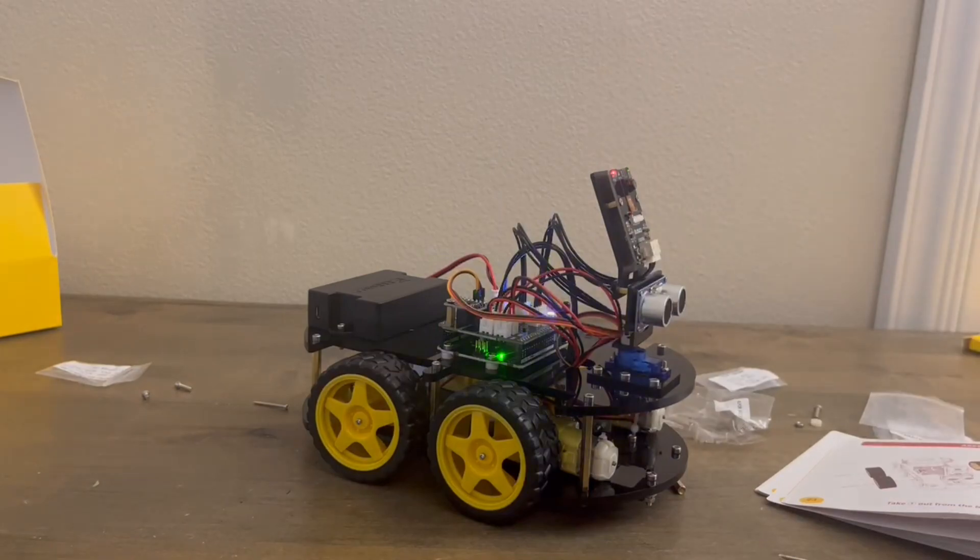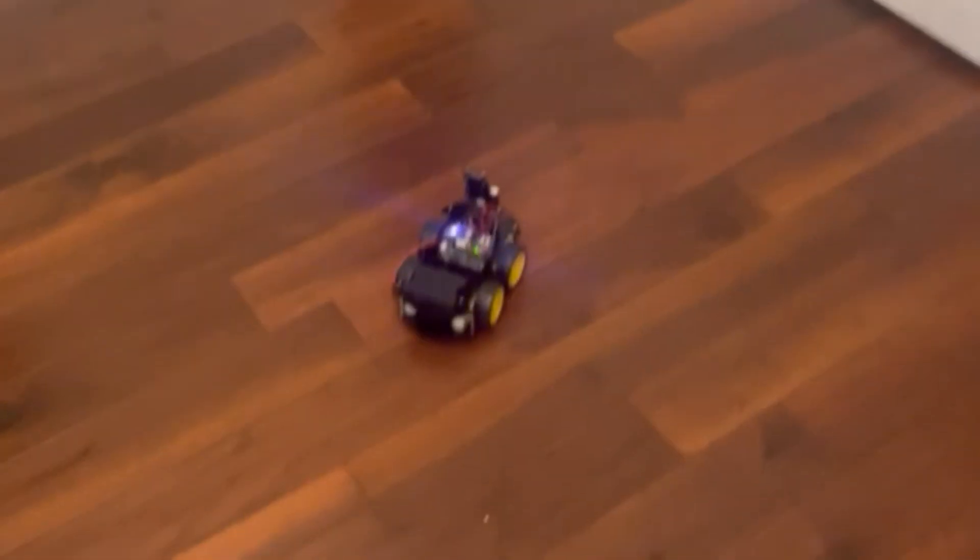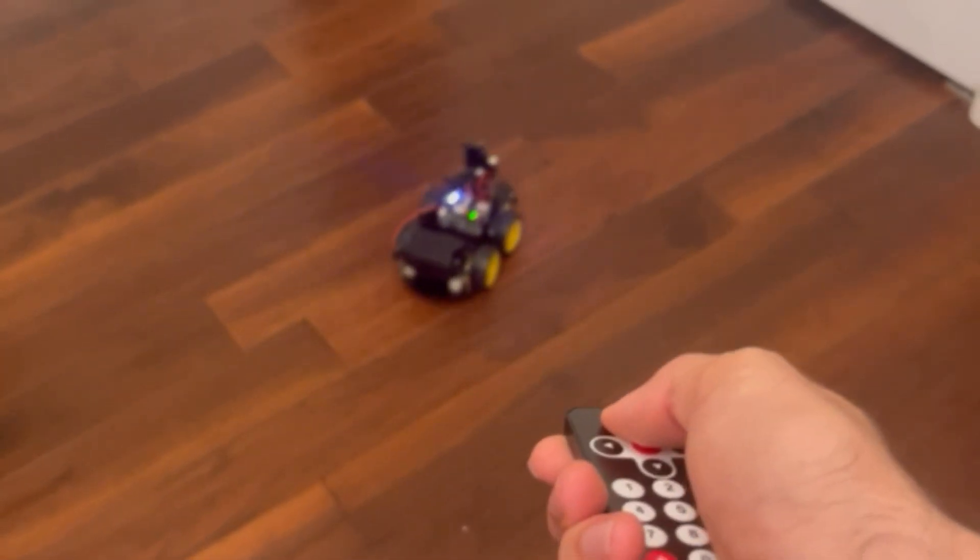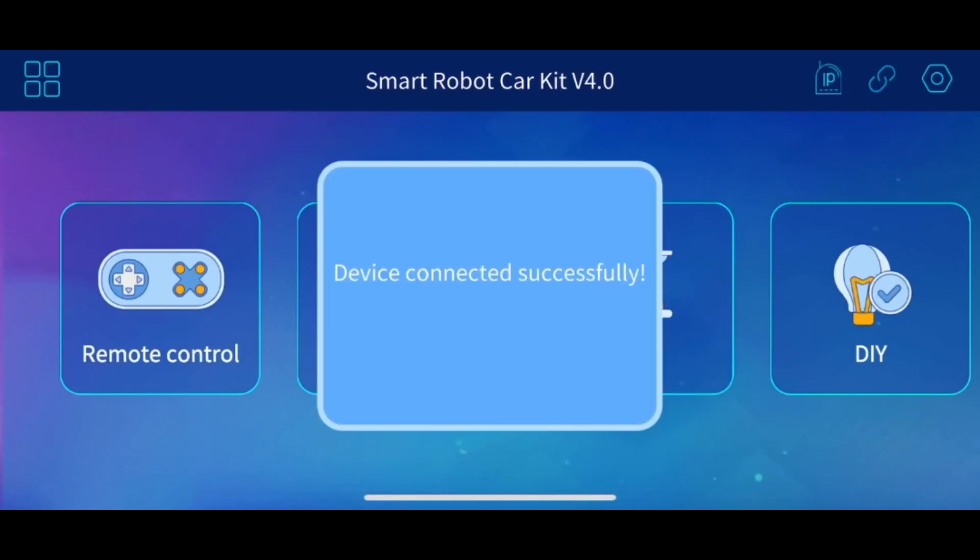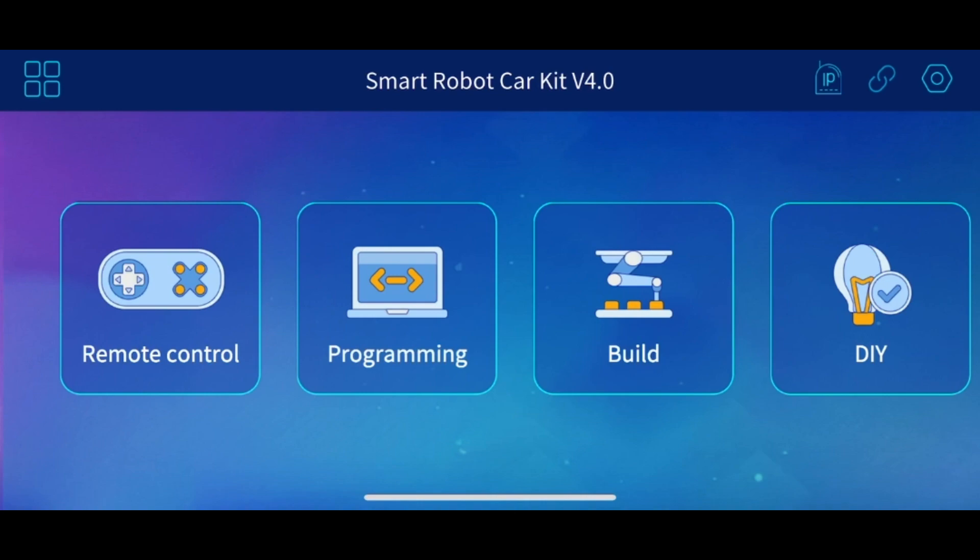You can simply plug in the battery to get it to start working. The kit comes with an infrared remote that runs on a replaceable battery that you can use to control the car manually. Or you can control the robot with your phone by downloading the Elegoo Kit app from the App Store or Google Play.